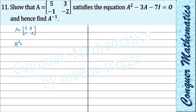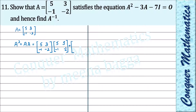We have to find A squared first. A squared means A into A — multiply matrix A with itself: [5, 3; -1, -2] into [5, 3; -1, -2]. Computing: 5×5 + 3×(-1) = 25-3 = 22; 5×3 + 3×(-2) = 15-6 = 9; (-1)×5 + (-2)×(-1) = -5+2 = -3; (-1)×3 + (-2)×(-2) = -3+4 = 1. So A² = [22, 9; -3, 1].